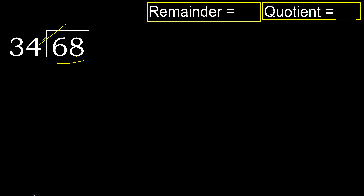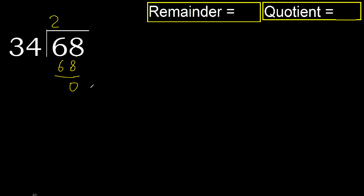34 multiplied by 3 is greater. Multiplied by 2: 68 is not greater, okay. Subtract — 0. Next digit: that is not a number, therefore finish. Quotient is 2, remainder is 0.